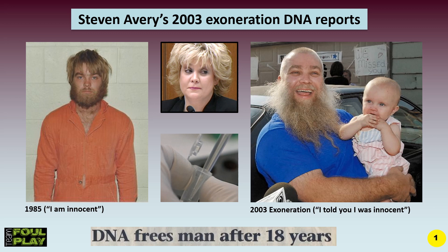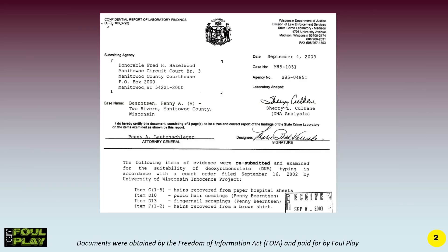So what we're going to do today is have a look at the 2003 Exoneration DNA Reports. I'm going to go through it step by step. These documents were obtained by FOIA and paid for by Foul Play — members of our team went out and FOIA'd these documents. First of all, let's have a look at the date of this report: September the 4th, 2003.